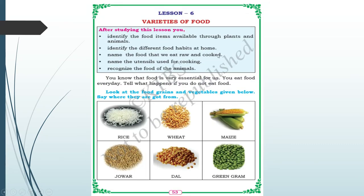In this lesson you are going to identify the food items available through plants and animals, see different food habits at home, name some food which we eat raw and cooked, see the utensils used for cooking, and recognize the food of animals.